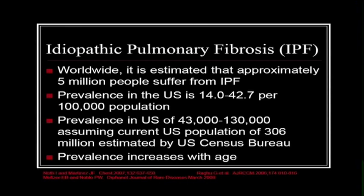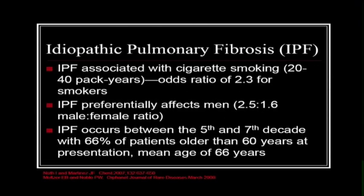The prevalence increases with age. While IPF is not strictly a disease caused by smoking like emphysema and COPD, it is associated with cigarette smoking with an odds ratio of 2.3 for smokers. It preferentially affects men with a male-to-female ratio of 2.5 to 1.6, and usually occurs between the 5th and 7th decade, with 66% of patients older than 60 at the time of diagnosis.